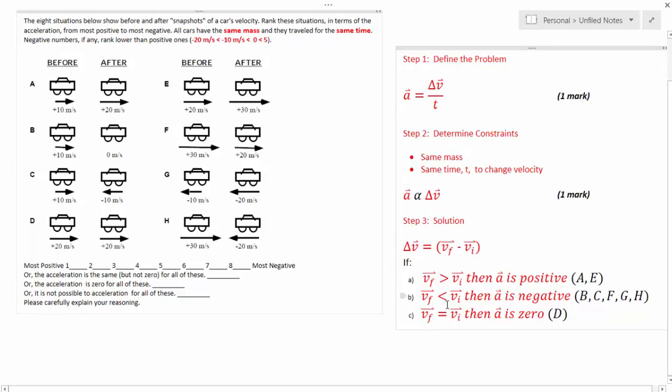Similarly for b, if v-final is less than v-initial, then my acceleration will be negative. And I've identified that consists of situations b, c, f, g, and h.